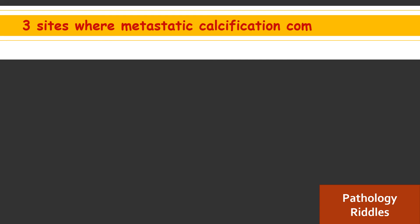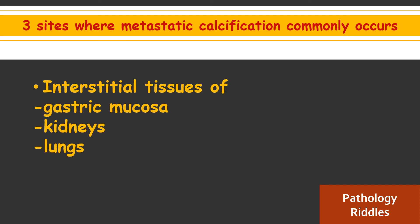Mention three sites where metastatic calcification commonly occurs. This can happen in the interstitial tissues of the gastric mucosa, kidneys, and lungs. What these tissues have in common is they excrete acid, and so they have an internal alkaline compartment which predisposes them to metastatic calcification. As a result, calcium gets deposited in the interstitial tissues of these particular organs.